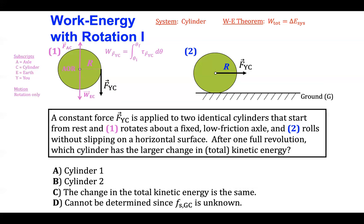If I integrate the torque that that force creates on the cylinder as the cylinder makes one complete revolution, the torque that force creates is just the distance R — the distance the force acts from the axis of rotation — times the magnitude of that force. The force is perpendicular to that distance from the axis of rotation. As the cylinder makes one full revolution, it undergoes an angular displacement of 2π radians. So 2π times R times F_YC is going to be the amount of work done by that force on the cylinder, which is equal to the change in rotational kinetic energy that the cylinder experiences.